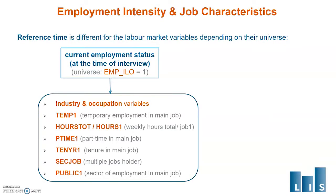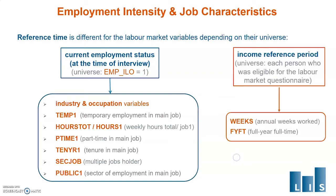The labor market variables have different reference times. Job characteristics refer to the employment status at the time of the interview, while annual weeks worked and the flag for working full-time the entire year refer to the income reference period and are asked to all those eligible for the labor market questionnaire. It is important to be aware of this when, for example, you use current labor force status in conjunction with income. Someone who is retired at the moment of the interview would have been employed in the reference period and can have the weeks variable filled and yearly labor income.